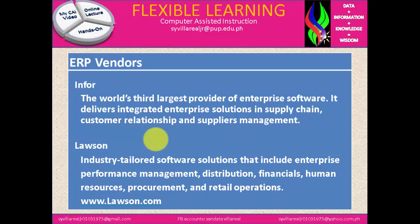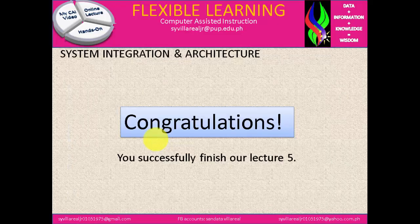Next, we have Infor, the world's third largest provider of enterprise software. It delivers integrated enterprise solutions in supply chain, customer relationship, and supplier management. We also have Lawson, an industry-tailored software solution that includes enterprise performance management, distribution, financials, human resources, procurement, and retail operations. You can visit www.lawson.com for more details. That's all for today — thank you for watching, and good luck. Congratulations on successfully finishing lecture number 5.